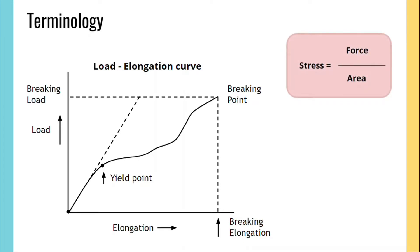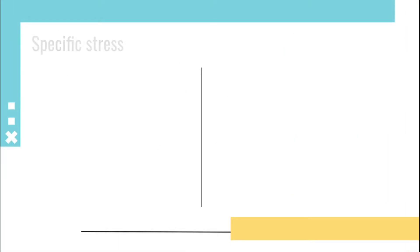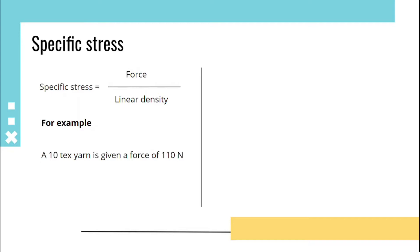Specific stress is the ratio of force upon linear density. For example, a 10 tex yarn is given a force of 110 Newtons. Its specific stress is 110 upon 10, that will be 11 Newtons per tex.